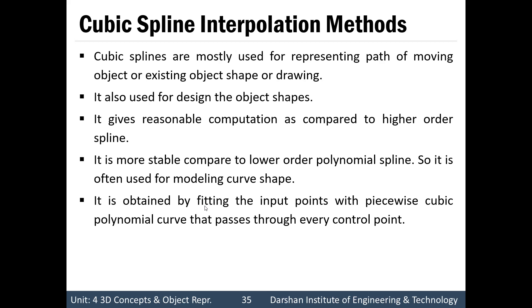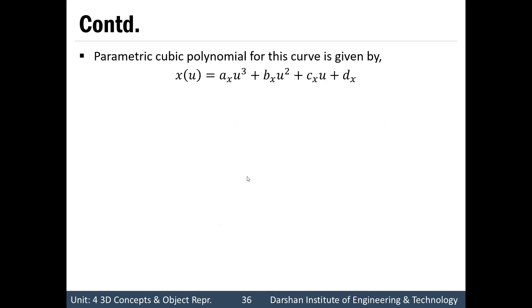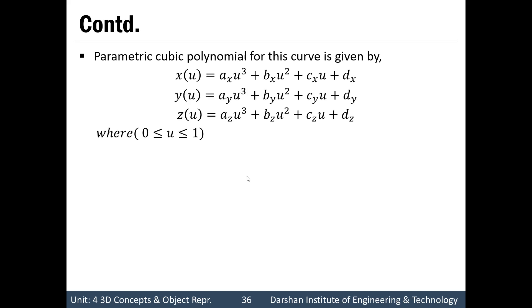A cubic spline is obtained by fitting input points with a piecewise cubic polynomial curve that passes through every control point. We have a total of n+1 control points, from p0 to pn. A parametric cubic polynomial for a curve is given by: x(u) = ax·u³ + bx·u² + cx·u + dx, which is a generalized equation applicable for y and z as well, where u varies from 0 to 1.